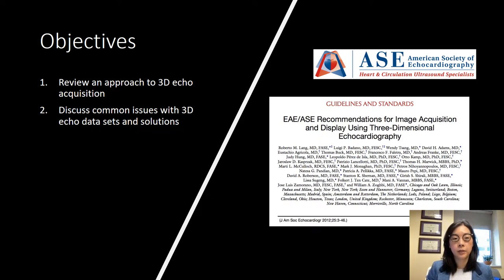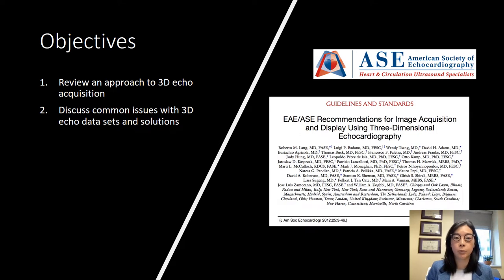I'm going to use a combination of transthoracic and transesophageal echocardiographic imaging, as the concepts for acquisition are the same regardless of what modality you're going to use. The vendors will have different nomenclature; as long as you understand the terminology and what that means, you'll be able to optimize the images on your machine no matter what vendor you're using. Where there's a significant difference in nomenclature I'll try to point it out on my slides.